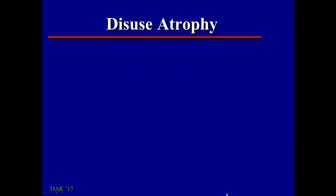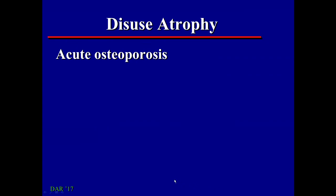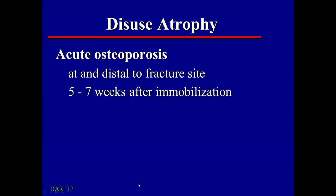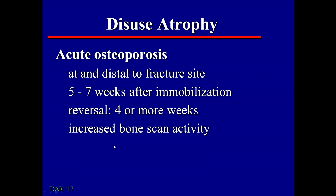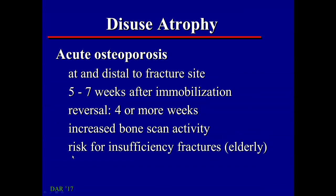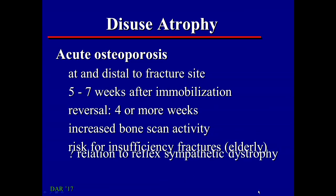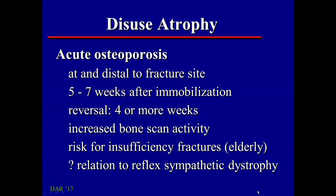There's one radiographic feature of fracture healing we should discuss: disuse osteoporosis. This is part of normal fracture healing — it's acute osteoporosis that typically happens at and distal to the fracture site. It usually commences about one to two months after immobilization. Once the patient starts using their extremity again, reversal takes at least as long as it took to develop, but at least four weeks. Even though this is normal, the bone is still weak and is a risk for insufficiency fractures — especially in the elderly. Some think this is also related to reflex sympathetic dystrophy, where the signal to turn off the osteoporosis never arrives and it just runs amok.